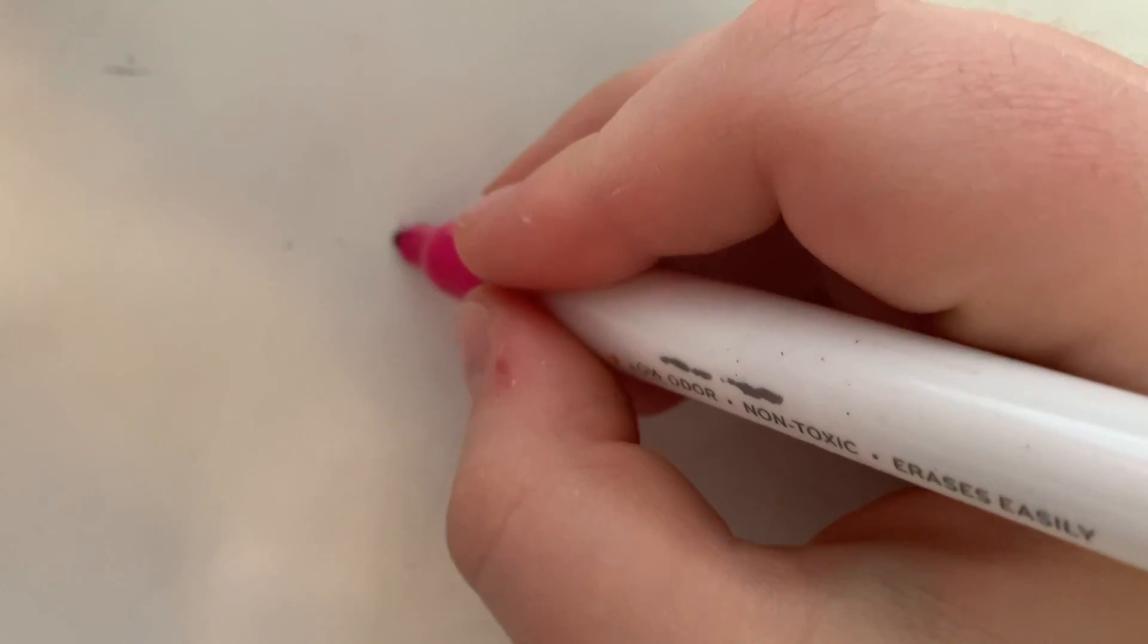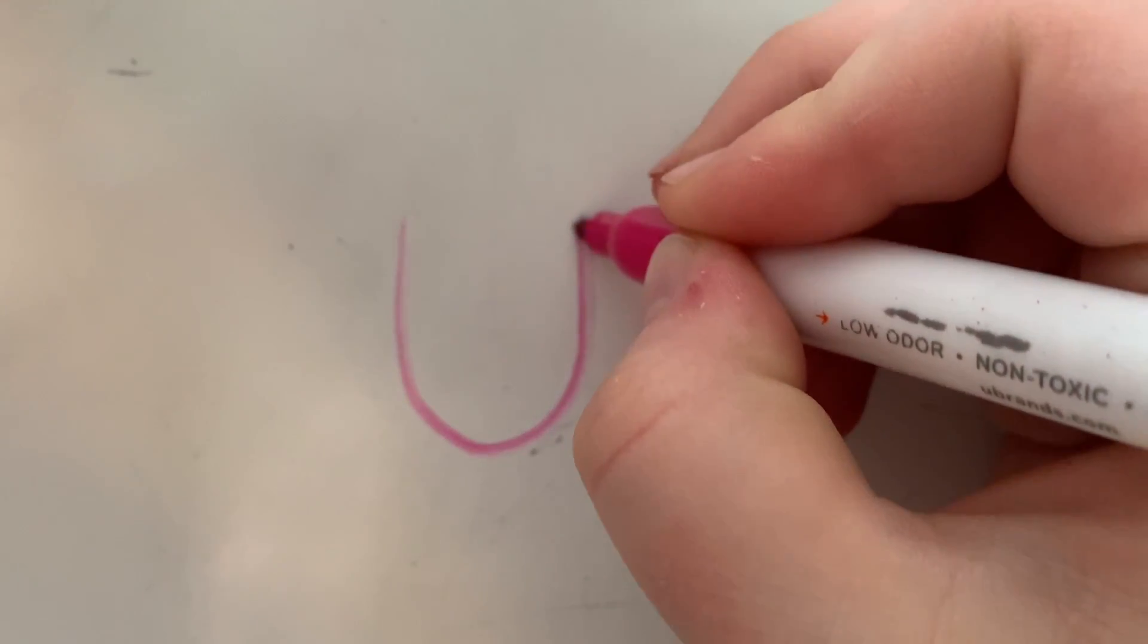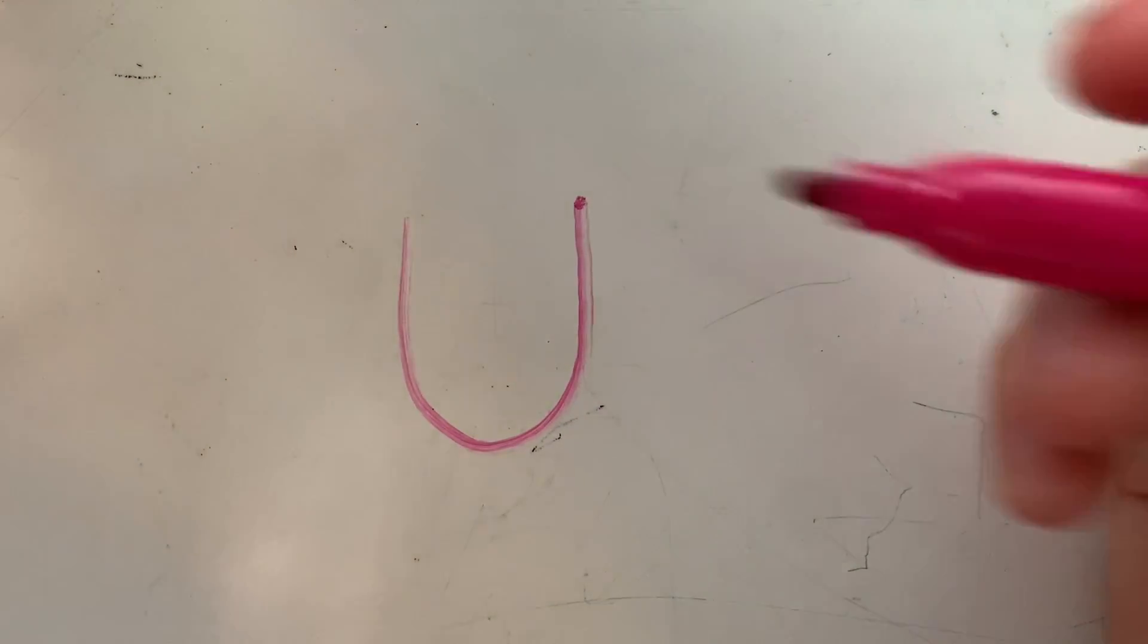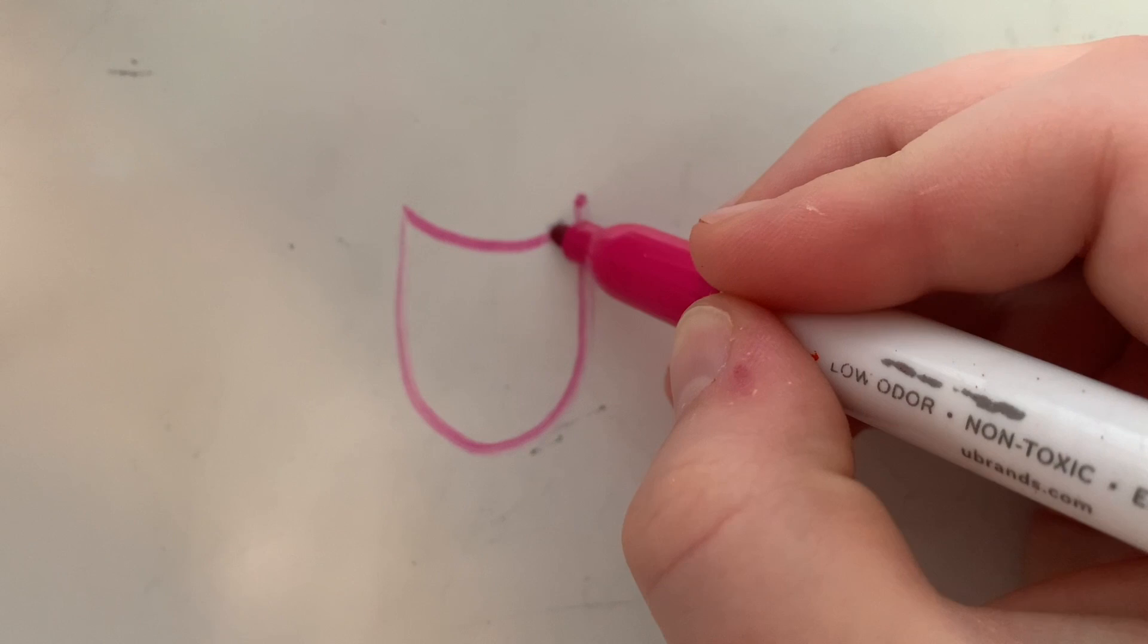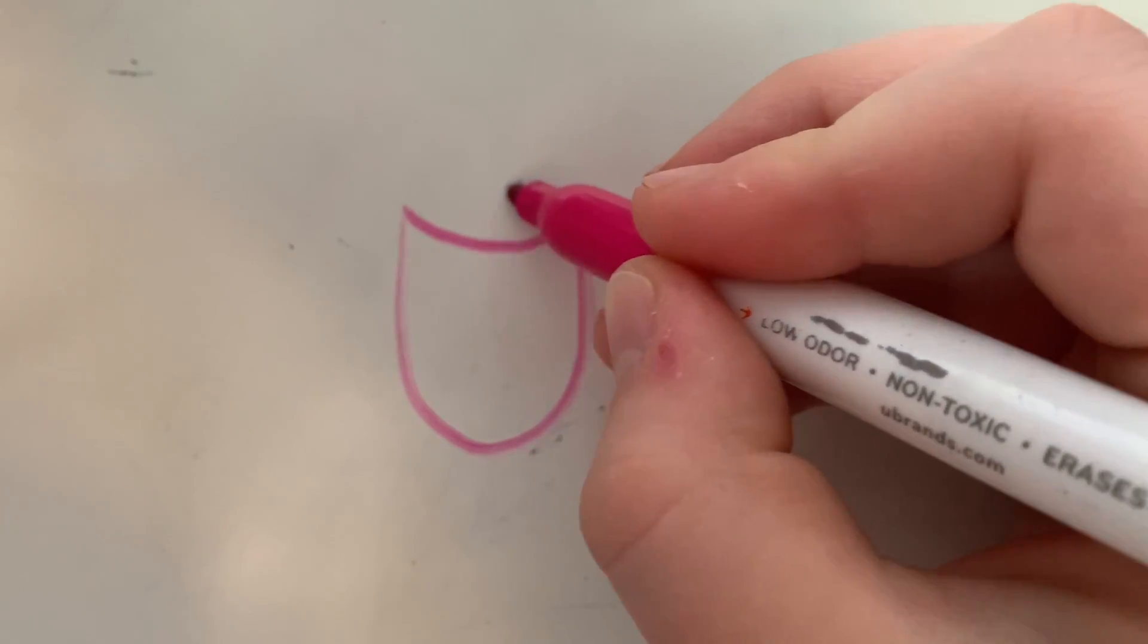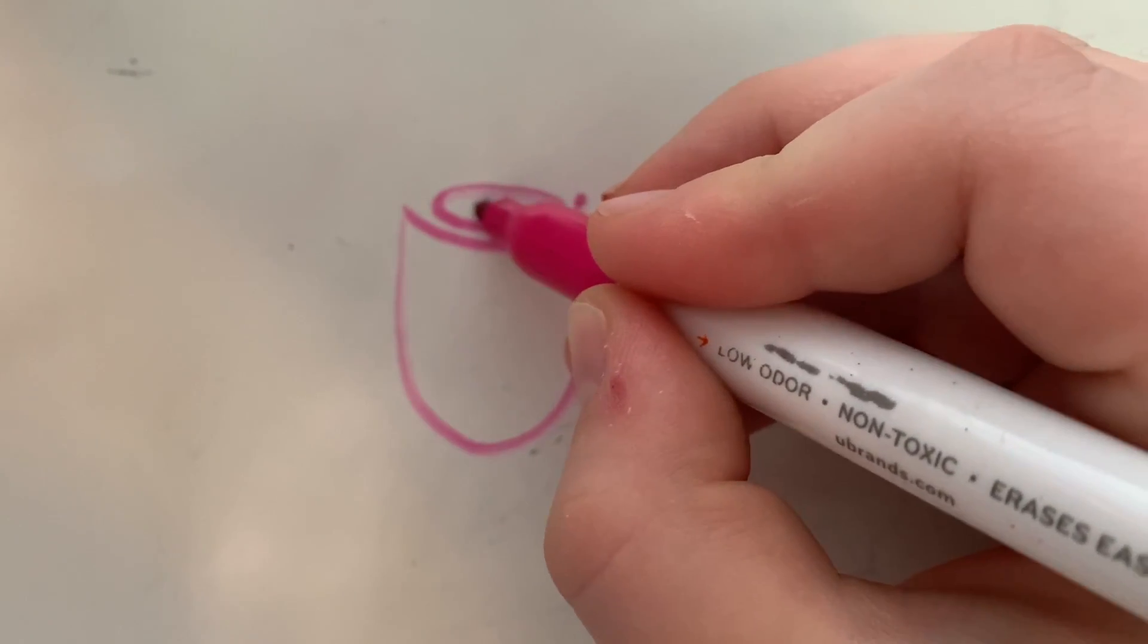So I'm going to start by grabbing this pink marker and then I'm going to draw a u-shape just like that. Then from there you're going to want to make a smaller u that kind of dips down and then you want to carry this and loop it around like that.